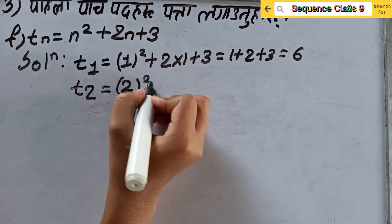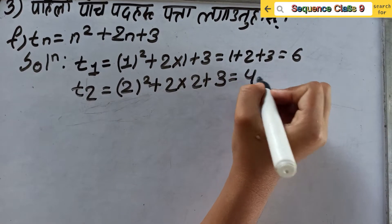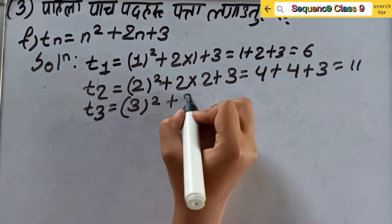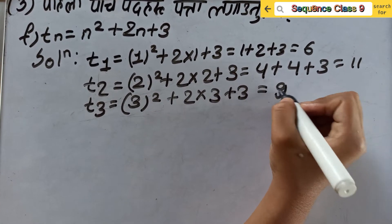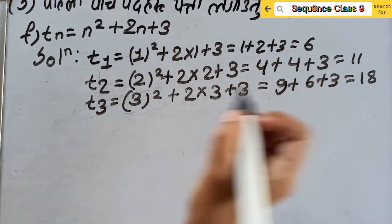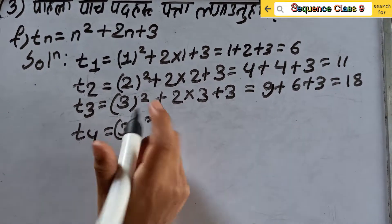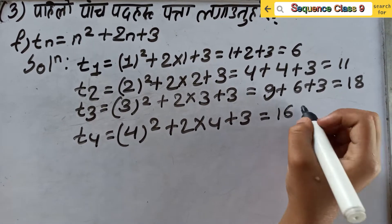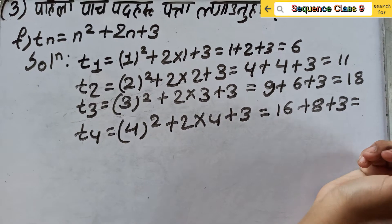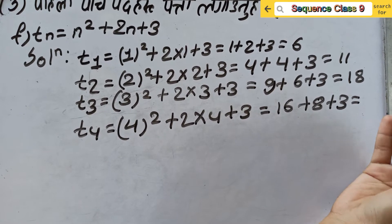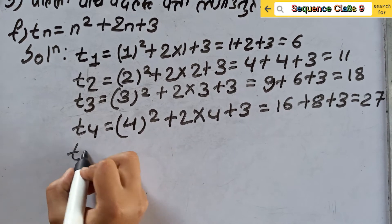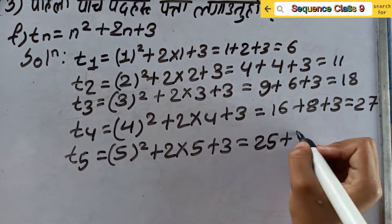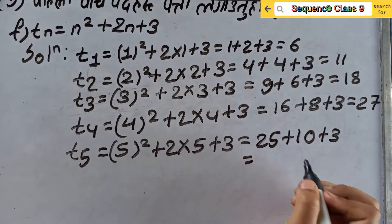T2 is equal to 4 whole square plus 2 into 2 plus 3, equal to 4 plus 4 plus 3, equal to 11. T3 is equal to 3 whole square plus 2 into 3 plus 3, equal to 9 plus 6 plus 3, equal to 18. T4 is equal to 4 whole square plus 2 into 4 plus 3. T5 is equal to 5 whole square plus 2 into 5 plus 3, equal to 25 plus 10 plus 3, equal to 38.